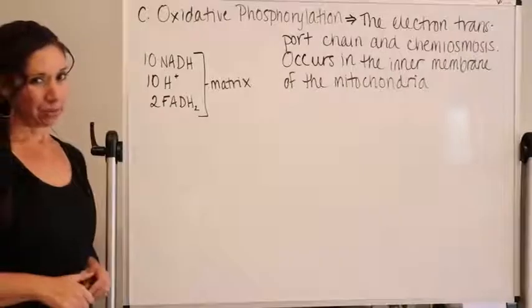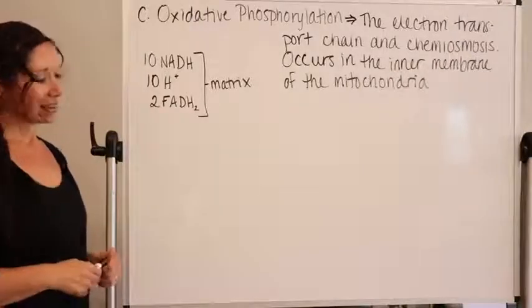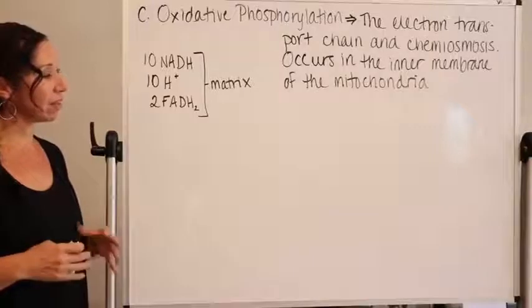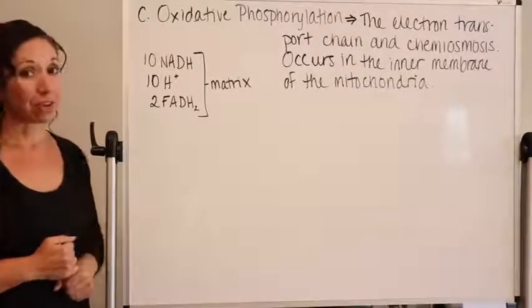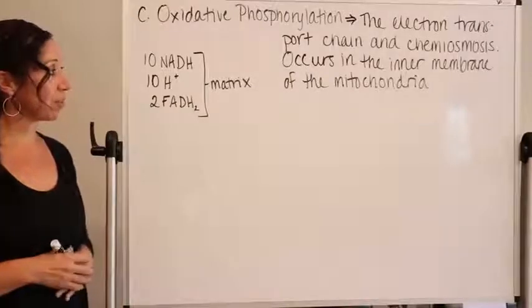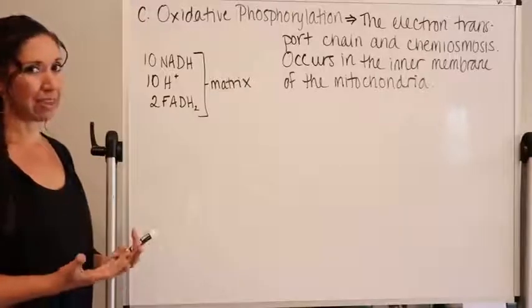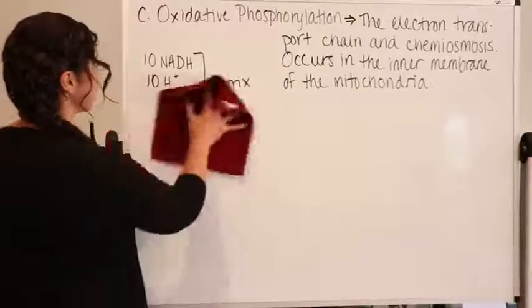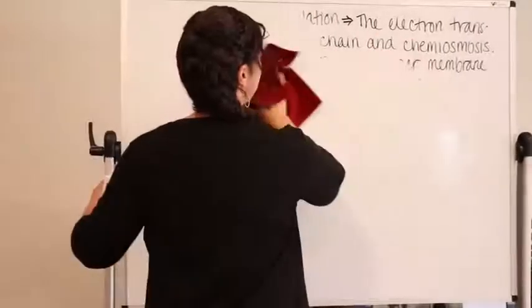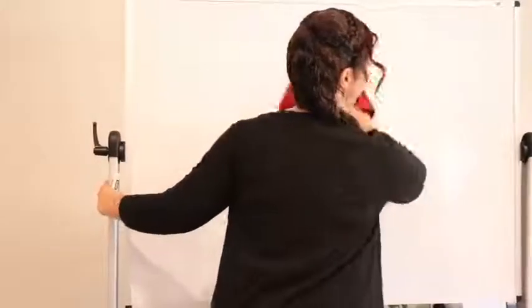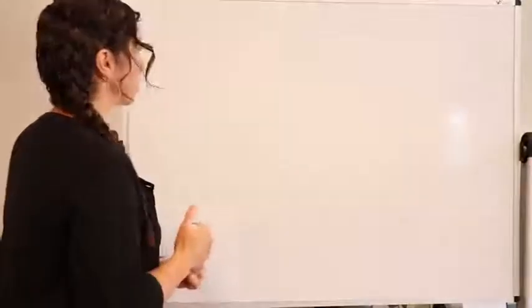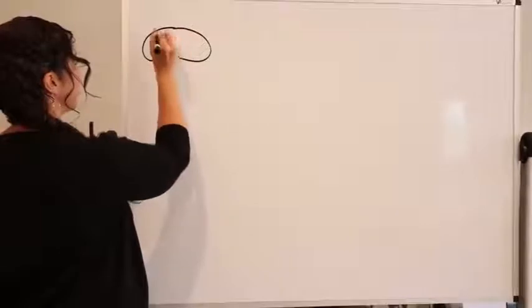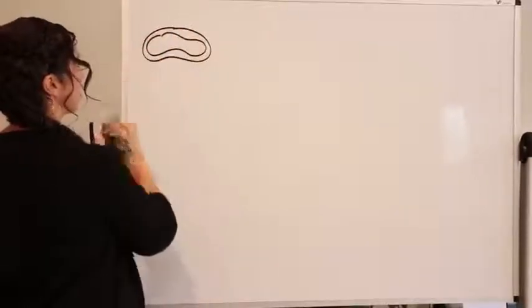So far we've worked in the cytosol for glycolysis, and in the matrix for the citric acid cycle. Now all the stuff we need to feed into oxidative phosphorylation is residing inside the matrix of the mitochondria. The matrix is surrounded by the inner membrane, so it can interact with it. This process occurs in the inner membrane of the mitochondria.